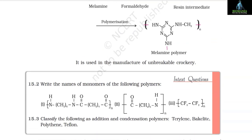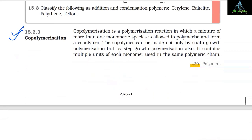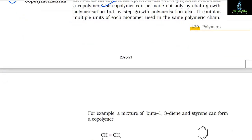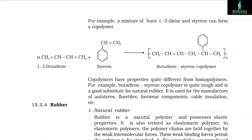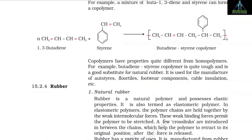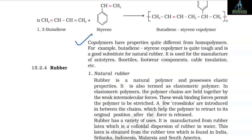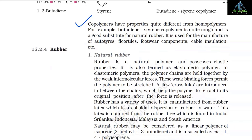15.2.3 Co-polymerization: Co-polymerization is a polymerization reaction in which a mixture of more than one monomeric species is allowed to polymerize and form a co-polymer. The co-polymer can be made not only by chain growth polymerization but also by step growth polymerization, and it contains multiple units of each monomer in the same polymeric chain. For example, a mixture of buta-1,3-diene and styrene can form a co-polymer. Co-polymers have properties quite different from homopolymers; butadiene-styrene co-polymer is quite tough and is a good substitute for natural rubber. It is used for the manufacture of auto tyres, floor tiles, footwear components, cable insulation, etc.